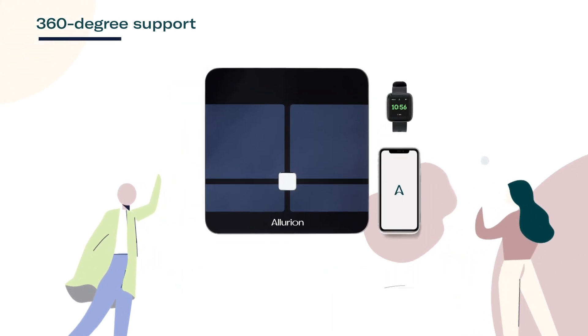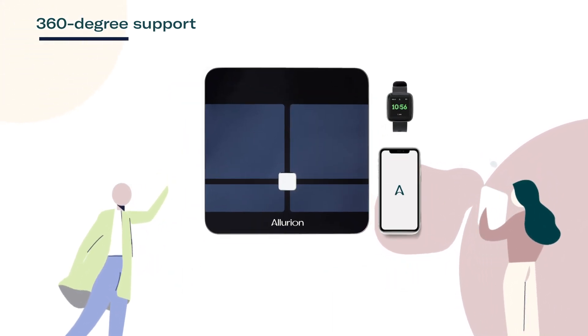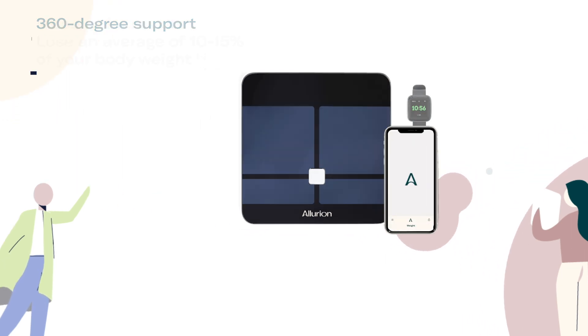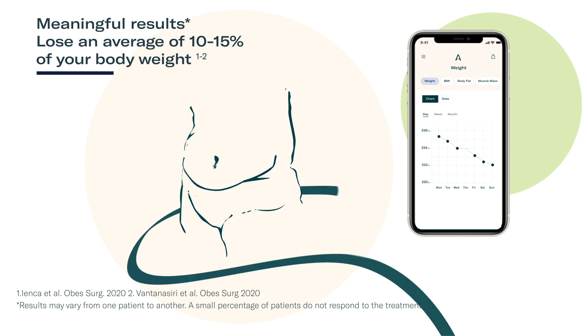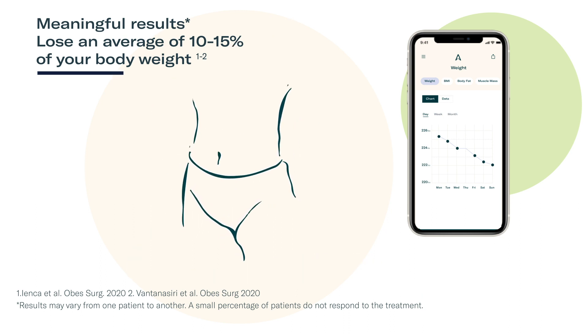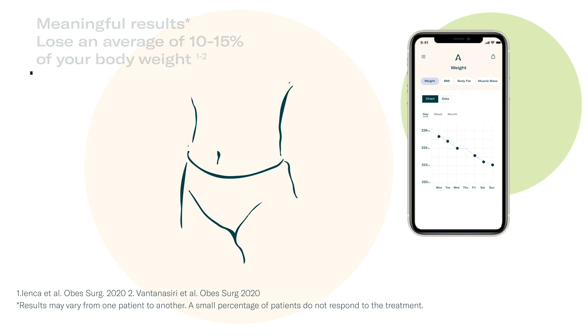The program also includes digital tools to help you stay motivated and maintain a healthy lifestyle. People lose an average of 10-15% of their body weight in approximately 16 weeks with the Allurion program and maintain up to 95% of the weight lost at one-year follow-up.